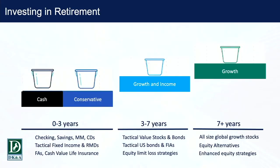That's why we talk about the bucket system — Rocky has done a great job illustrating it. When you're investing in retirement, if you're not taking much money out, you may not need a lot in conservative or cash positions. But if you're drawing significant amounts, you should have more in those conservative buckets — checking, savings, money markets, CDs, tactical fixed income, and cash value life insurance, which acts as a bond alternative but tax-free. This allows you to ride through any kind of recession that might come about.